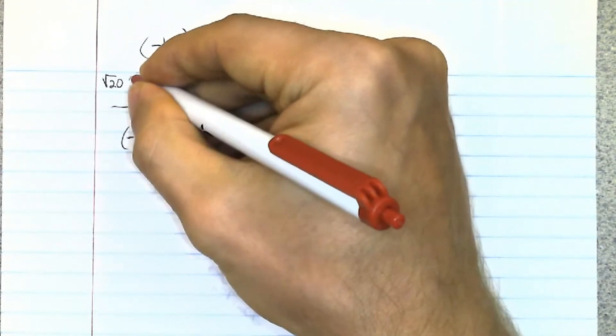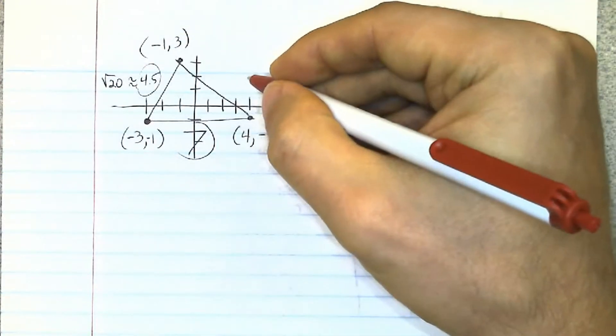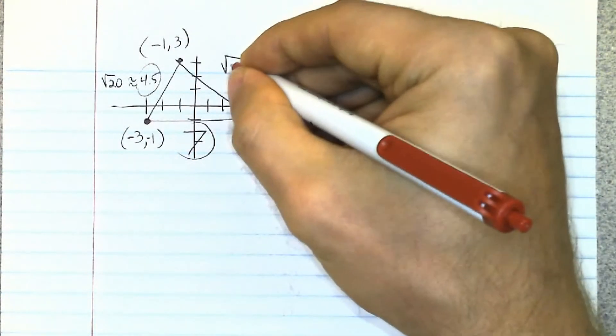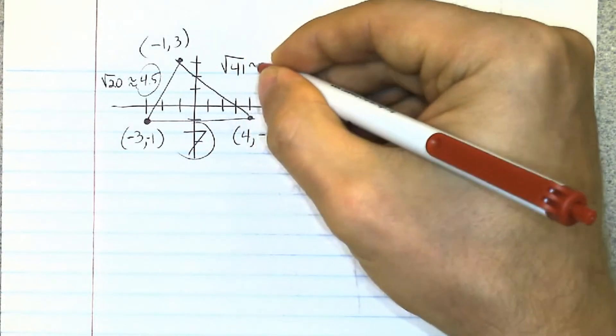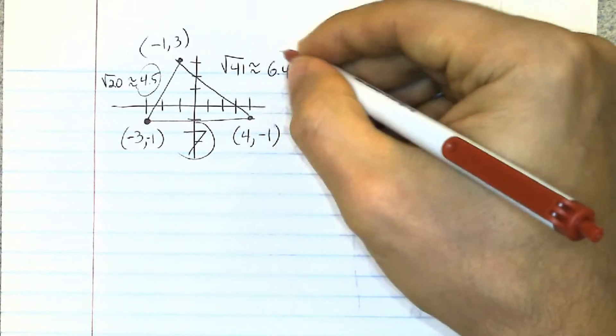Square root 20 is about 4.5 if we had to estimate. Right here this comes out to square root 41, and square root 41 is about 6.4 if we had to estimate.